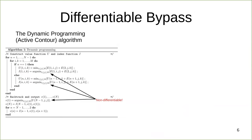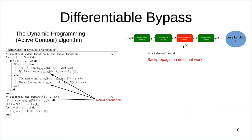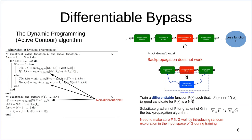The active contour algorithm has an argmin function, shown by the arrows, making it non-differentiable. Backpropagation does not work for models that have non-differentiable modules. To address this, we introduce a novel general-purpose concept called a differentiable bypass. A differentiable bypass is a neural network that is trained to mimic the output of a non-differentiable module. During backpropagation, we use the gradient of the differentiable bypass as a substitute for the gradient of the non-differentiable module.